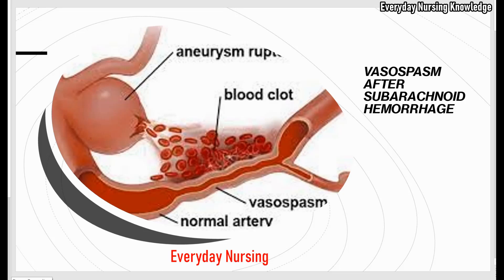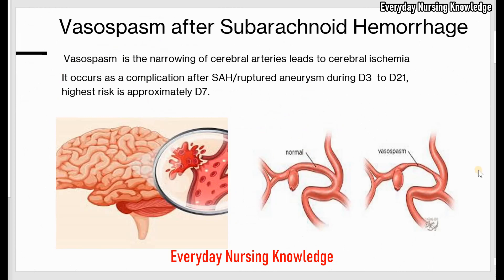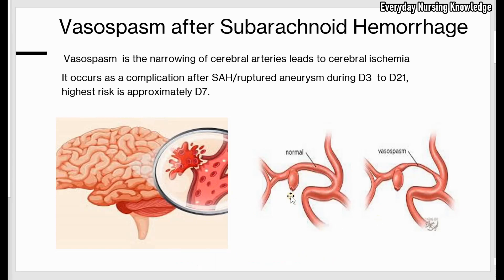Welcome to everyday nursing knowledge lectures. Today we will learn about vasospasm after subarachnoid hemorrhage. Vasospasm is the narrowing of the cerebral arteries that leads to decreased blood supply to the brain. It occurs as a complication of subarachnoid bleed — bleeding into the subarachnoid space — or a ruptured aneurysm, which is an outpouching of the blood vessels. Vasospasm usually occurs during day 3 to day 21, with highest risk at approximately day 7.